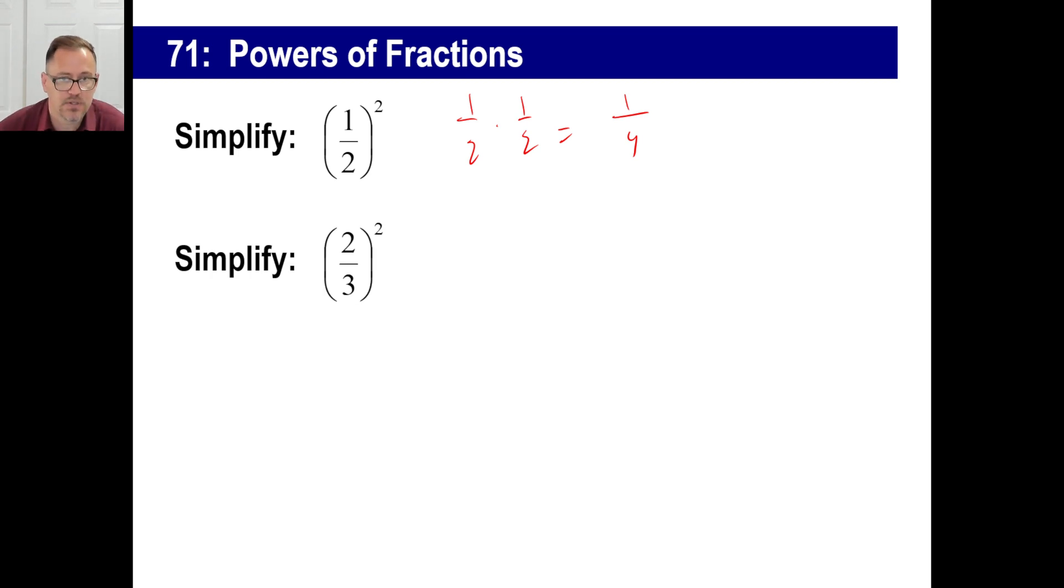How about that one? Two thirds squared means two thirds times two thirds, and that would be two times two on top, three times three on bottom. Boom. There you go.